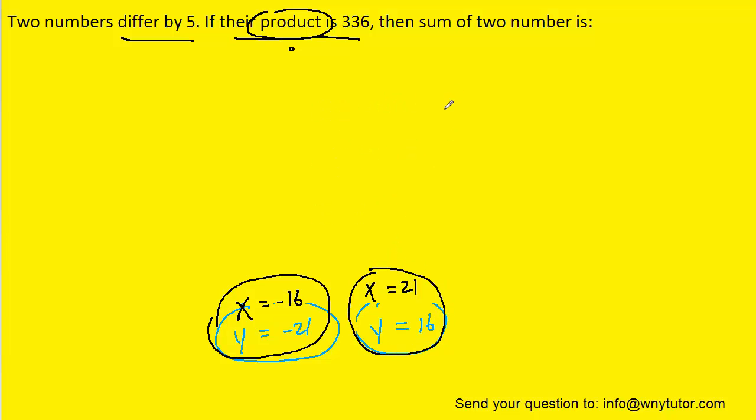Finally, we are ready to answer the question. The question wants the sum of the two numbers. Well, if we choose the first set of numbers, we would have negative 16 plus negative 21, and that would give us negative 37. So that would be one possible answer. And then the other set of solutions would yield 21 plus 16, which is positive 37. So actually, either one of these two answers would work.